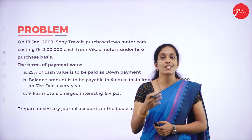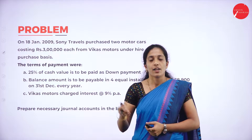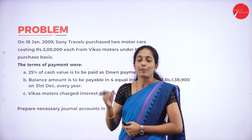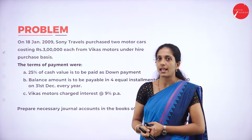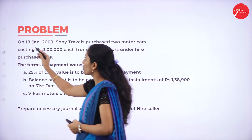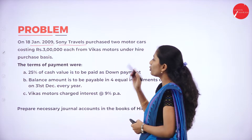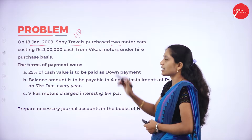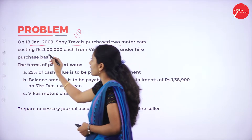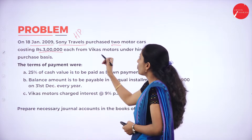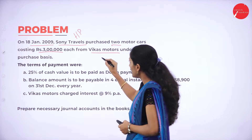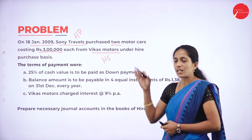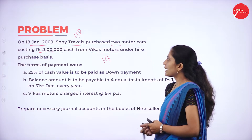Now we shall go through a problem where we have to prepare journal entries in the books of the hire seller. On 18th January 2009, Sony Travels purchased two motor cars costing rupees 3 lakh each from Vikas Motors on a hire purchase basis. Sony Travels is the hire purchaser and Vikas Motors is the hire seller.